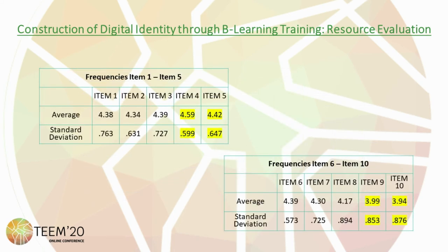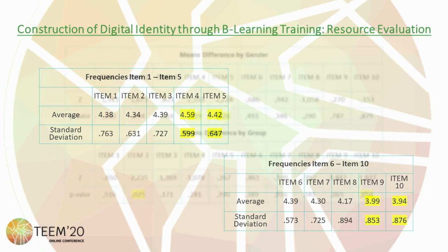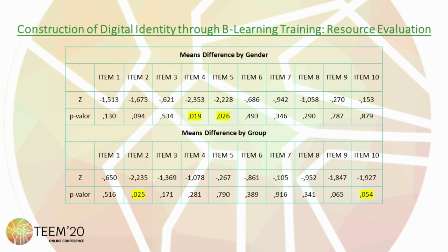In general, regarding the average score students awarded to the different items, the ones best valued correspond to number 4 and number 5, while the ones least valued are number 9 and number 10. Following the analysis conducted with the Mann-Whitney U test, it may be concluded that in terms of gender, the difference in means is statistically significant in items 4 and 5, and regarding differences found between groups, the difference in means is statistically significant in items 2 and 10.